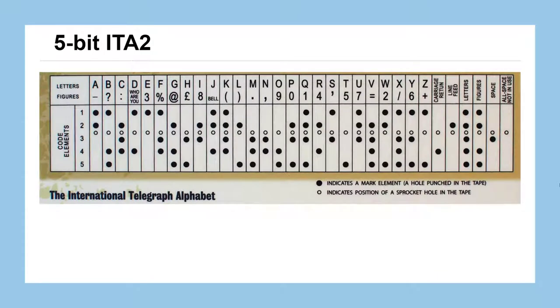Here you can see the different characters that corresponded to the different configurations of five bits. Now you might realize here that with a five-bit system, you should only be able to get 32 characters, but through a clever use of this letters and figures flipper, we could get essentially double the amount of characters.